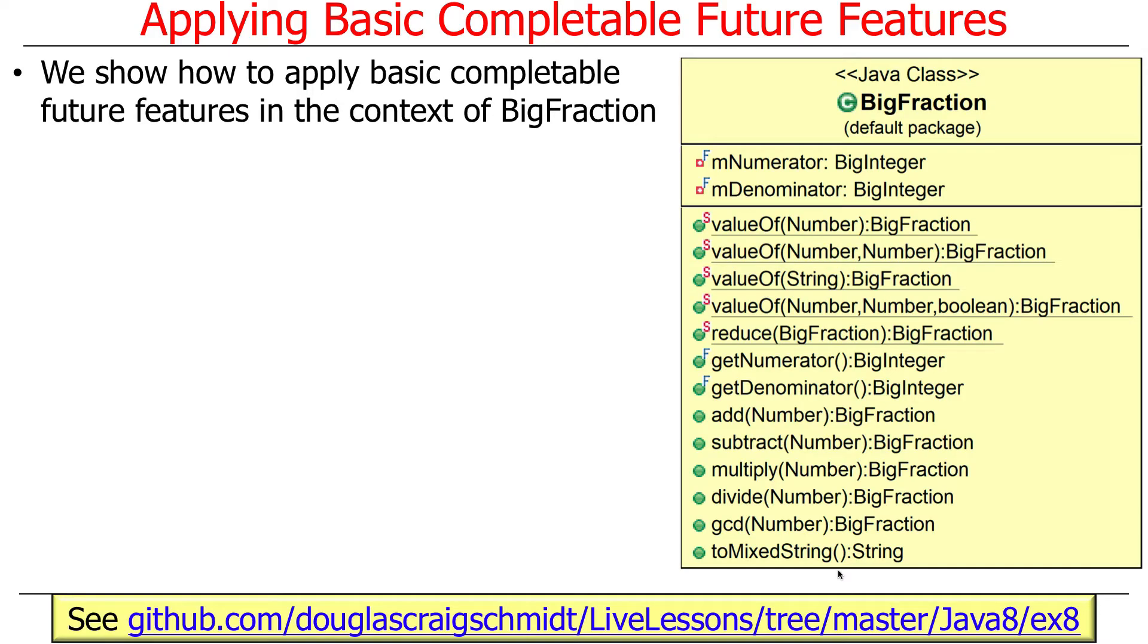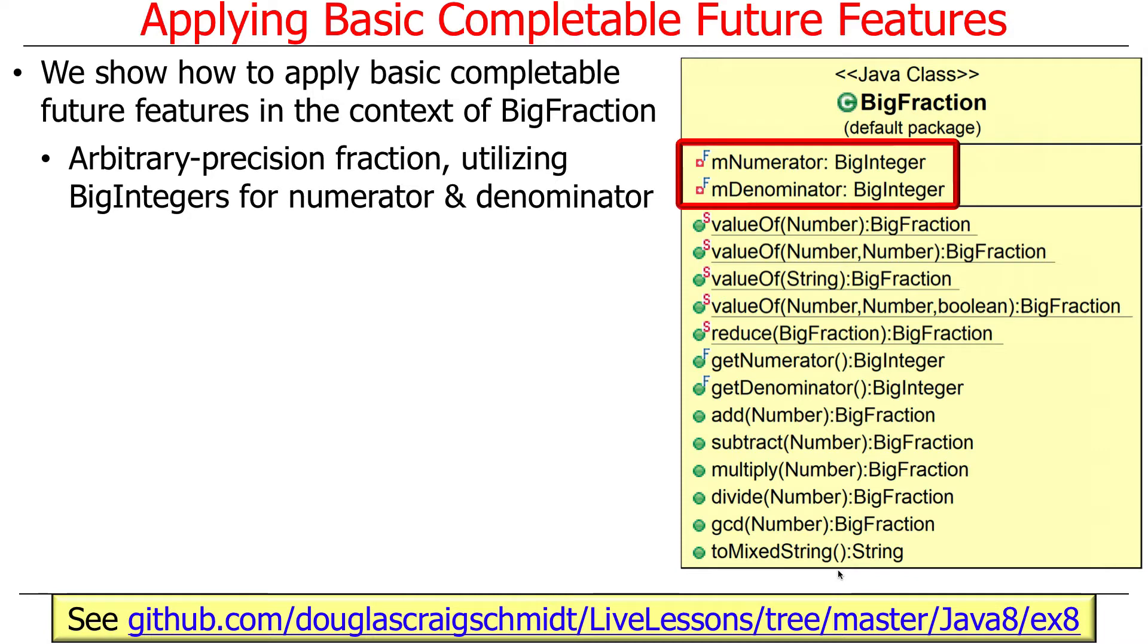So the example here is something called big fraction. A big fraction is essentially an arbitrary precision fraction package, where we have arbitrarily long numerator and denominator, and we can do all kinds of operations to multiply and divide and add and subtract and so on and so forth. So we can have gigantic big numbers, which are basically infinite precision. Why you would want infinite precision fractions is beyond me, but if you ever needed them, this is where you would go.